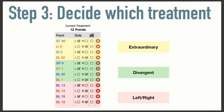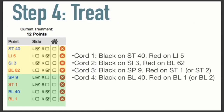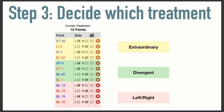In a previous webinar, we talked about understanding the differences between the different sections of the divergent channel treatment. Basically there are three styles of treatment within the entire treatment plan. I've differentiated them on your screen in yellow. The top four points in this treatment strategy are extraordinary vessels. The next four points are divergent points, and the last four have to do with left-right imbalances — they are back shu points on the body. When you're deciding which points to treat, you've got multiple options within those three strategies.